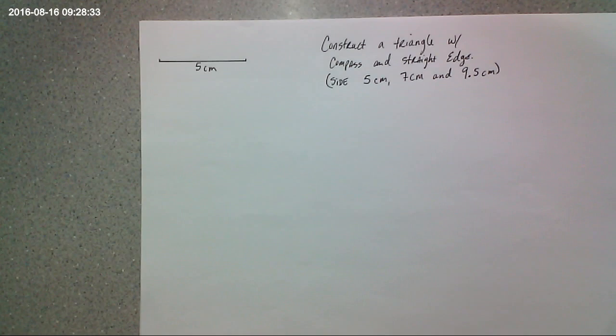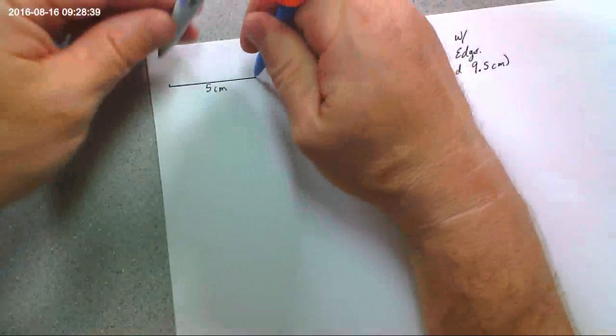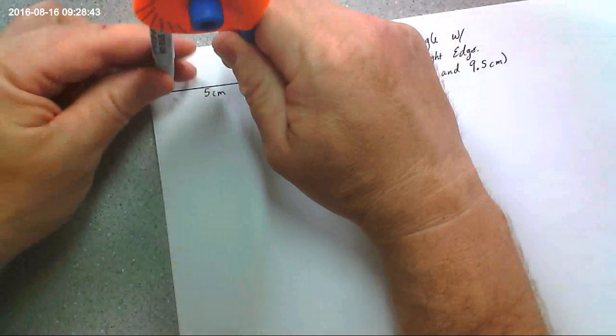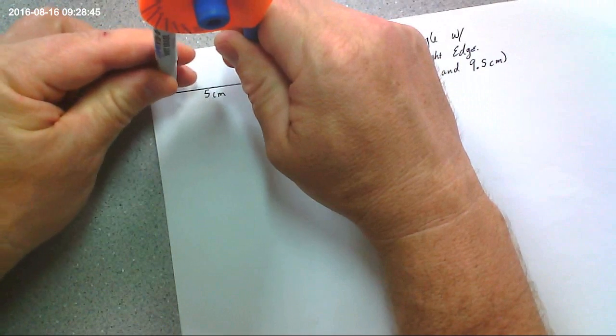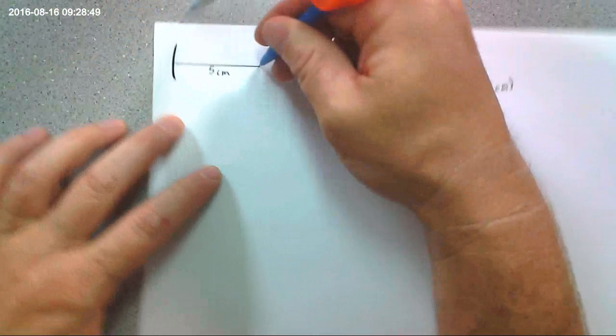So just like I was beginning to show you yesterday, you take the shank, put it on one end of your segment, open it up so that the pen or the pencil is on the opposite end. And then you draw an arc. There you go, just like that. See how I did that?